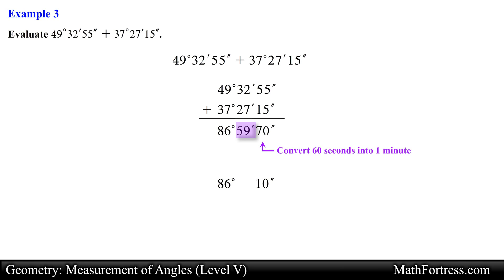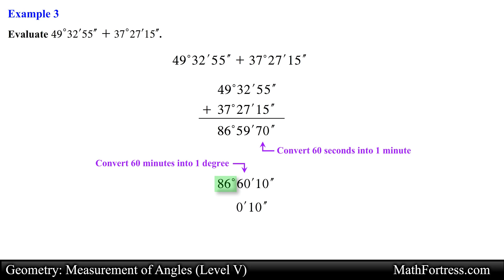We currently have 59 minutes in our answer. Adding 1 additional minute from the seconds place bumps this value to 60 minutes. Recall that 1 degree is equivalent to 60 minutes, so we exchange the 60 minutes for 1 degree, leaving us with 0 minutes. We now have 87 degrees total. The sum of these two angle measurements simplifies to 87 degrees 0 minutes 10 seconds, and this is our final answer.